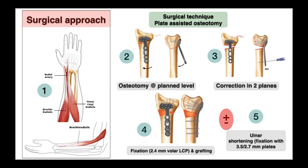Once the osteotomy is done, the volar locking plate is fixed to the distal segment and the anatomical design of the plate is used to achieve correction in both the sagittal and coronal planes. Once the deformity is corrected, fixation is completed by using multiple cortical and locking head screws. If further correction in ulnar variance is required, an ulnar shortening osteotomy is performed followed by fixation with either a 3.5 or 2.7 mm plate.